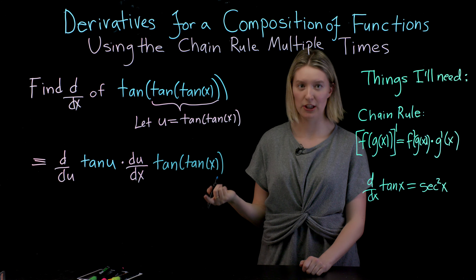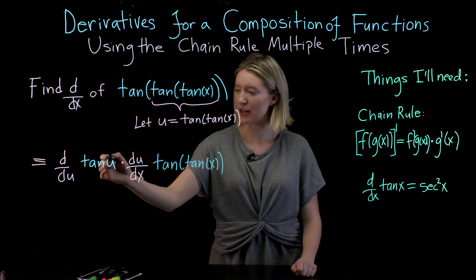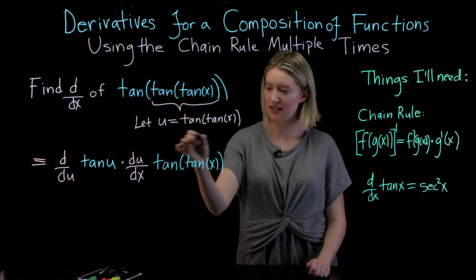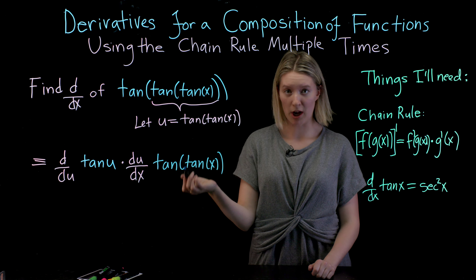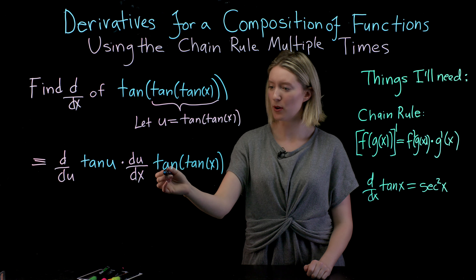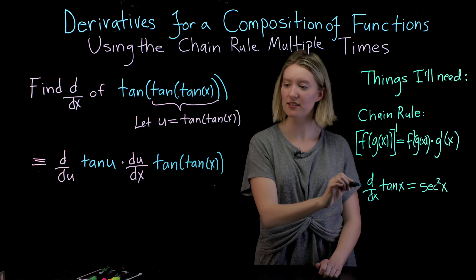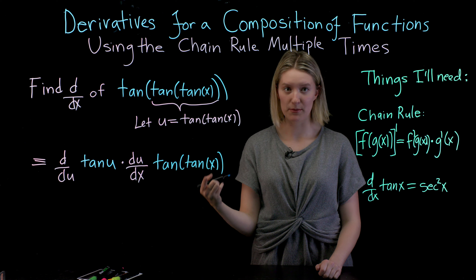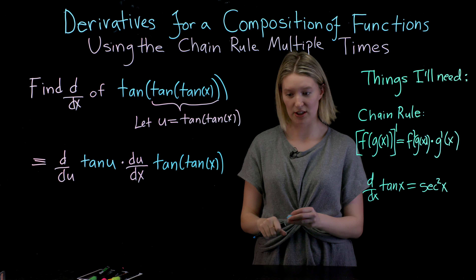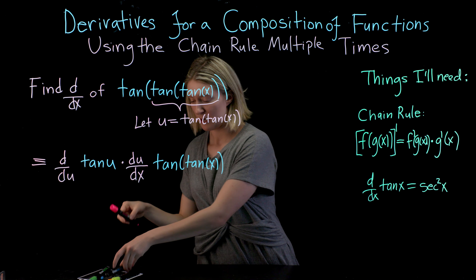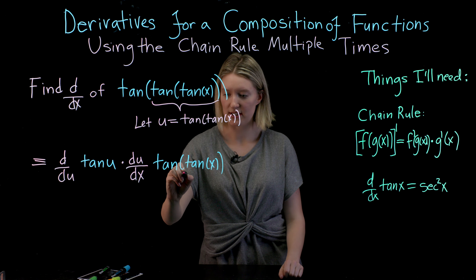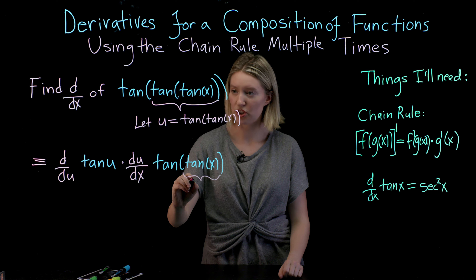At this point I look at my function again and say, well, I do know how to take the derivative of this portion. But this inner part is still more complicated than what I know how to handle directly — I only know how to take the derivative of tangent of x. So this is what prompts me to ask: should I use the chain rule again? And in this case, yes, I should.